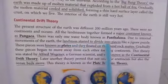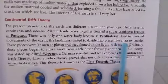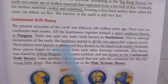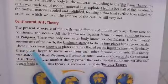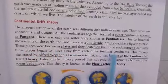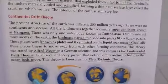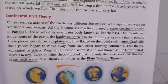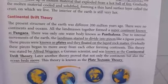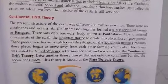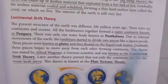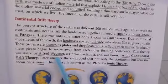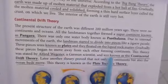Due to internal movements of the earth, the land mass started to divide into pieces like a jigsaw puzzle. These pieces are known as plates, and they floated on liquid rock matter. Gradually, these pieces began to move away from each other, forming different continents. This theory was stated by Alfred Wegener, a German scientist, and is called the Continental Drift Theory.